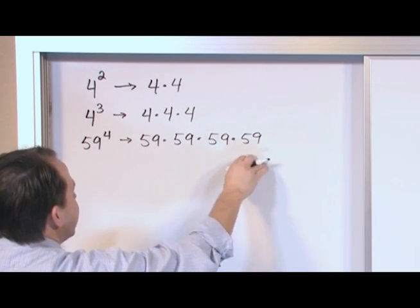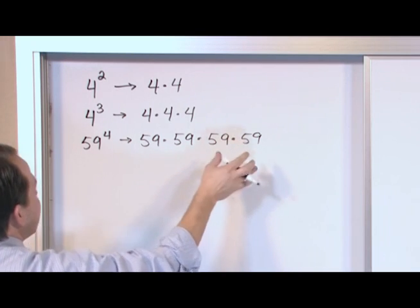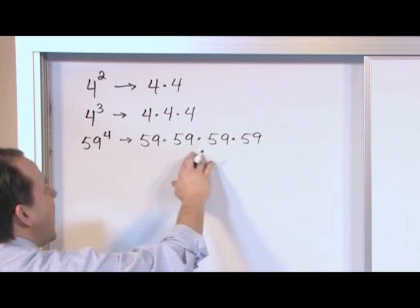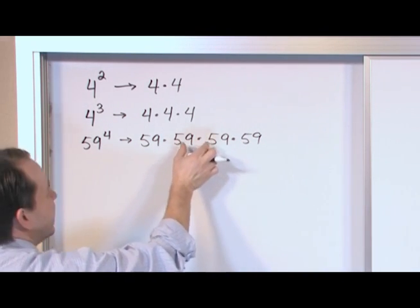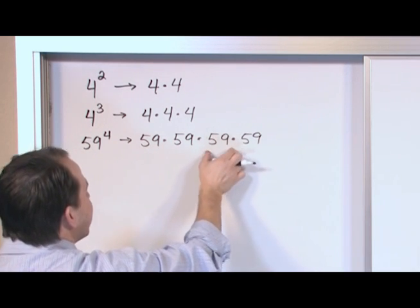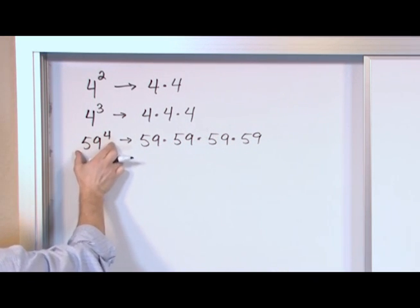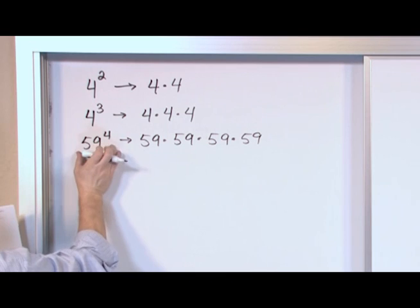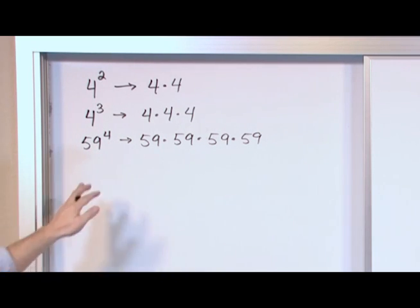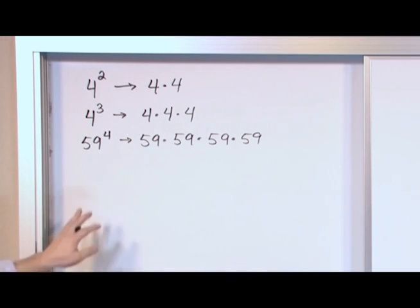Now this is a very large number. Take these numbers and multiply them in your calculator. You're going to get a giant number. This is why we use exponents. It's kind of a big pain to keep writing this multiplication out. We can write it like this and wrap it up much smaller and keep it nice and neat instead of writing all this multiplication out everywhere. So that's what an exponent is. That's the basic picture.